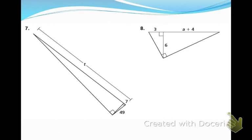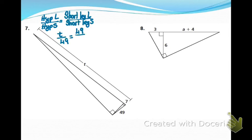Now I want you to compare. I'm hoping you set yours up with a hypotenuse of the large to the hypotenuse of the small equals short leg of the large to short leg of the small. And then when you put in all of your stuff, you should have gotten that t equals 343 units.